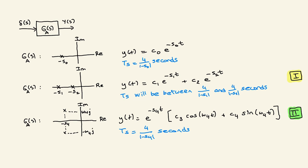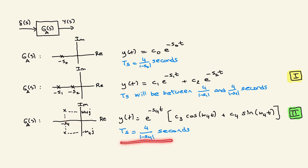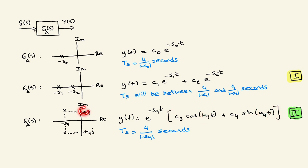Now let's talk about imaginary or complex poles — poles having an imaginary component. For this transfer function, the solution will have e to the power of minus s4 times t coming from the real part of the complex pole, so settling time will be 4 divided by |s4| seconds. Because of the imaginary component, this term will be multiplied by cosine and sine terms having frequency omega4.